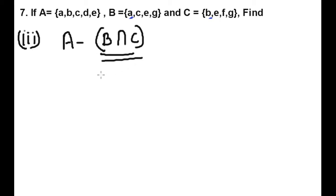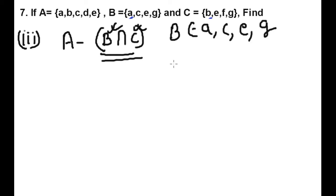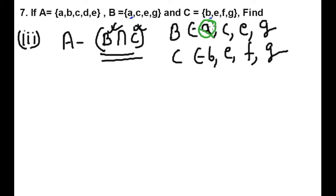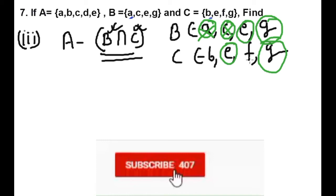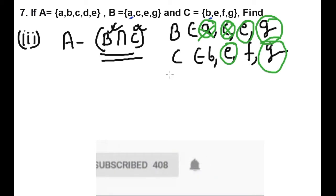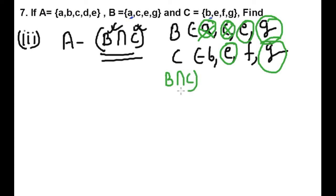So first of all we will find B intersection C. B intersection C means common elements between B and C. Elements of B are: A, C, E, G and elements of C are: B, E, F, G. Now finding common elements: A — no. C — no. E — yes, common. G — yes, common. So B intersection C equals {E, G}.